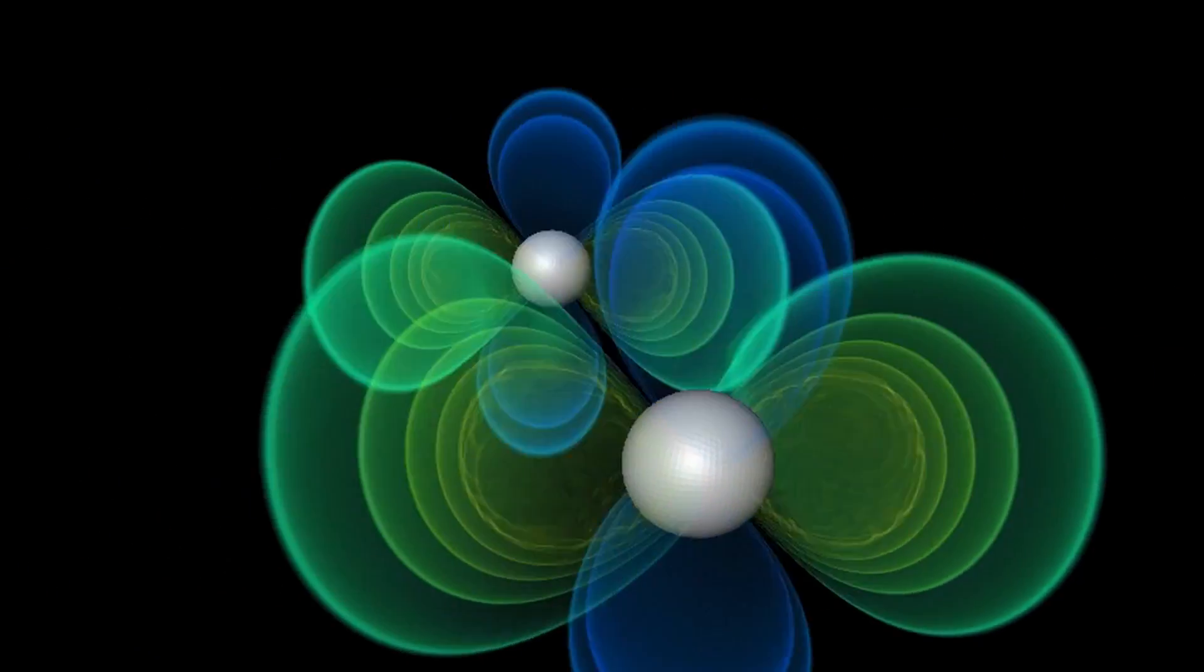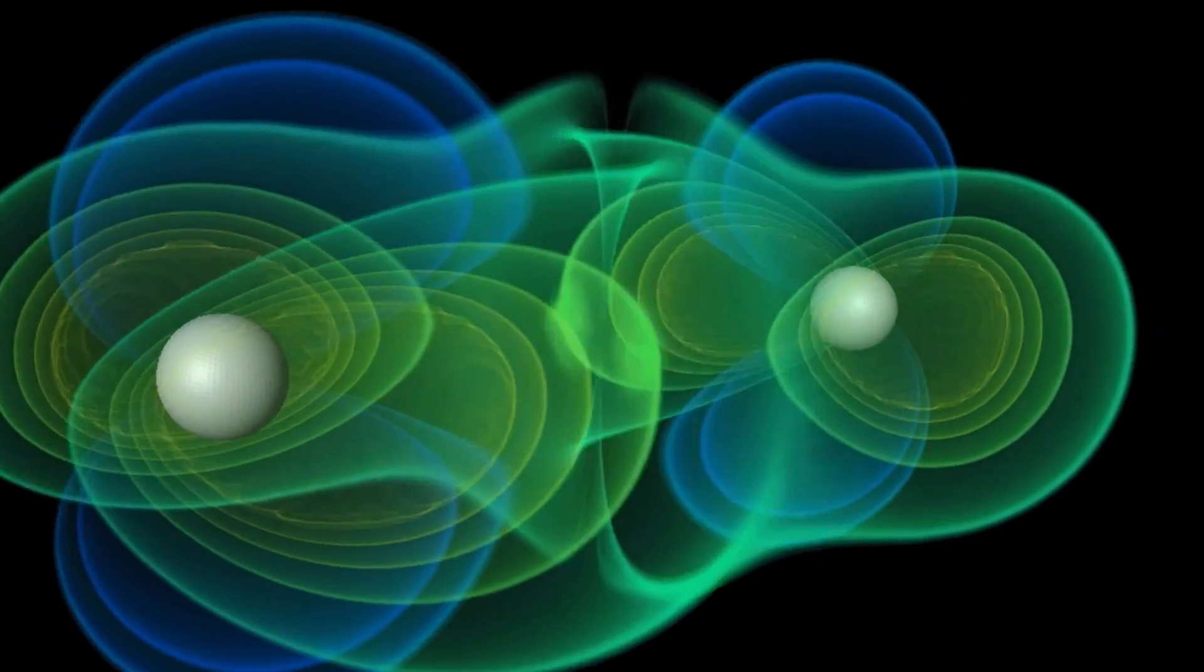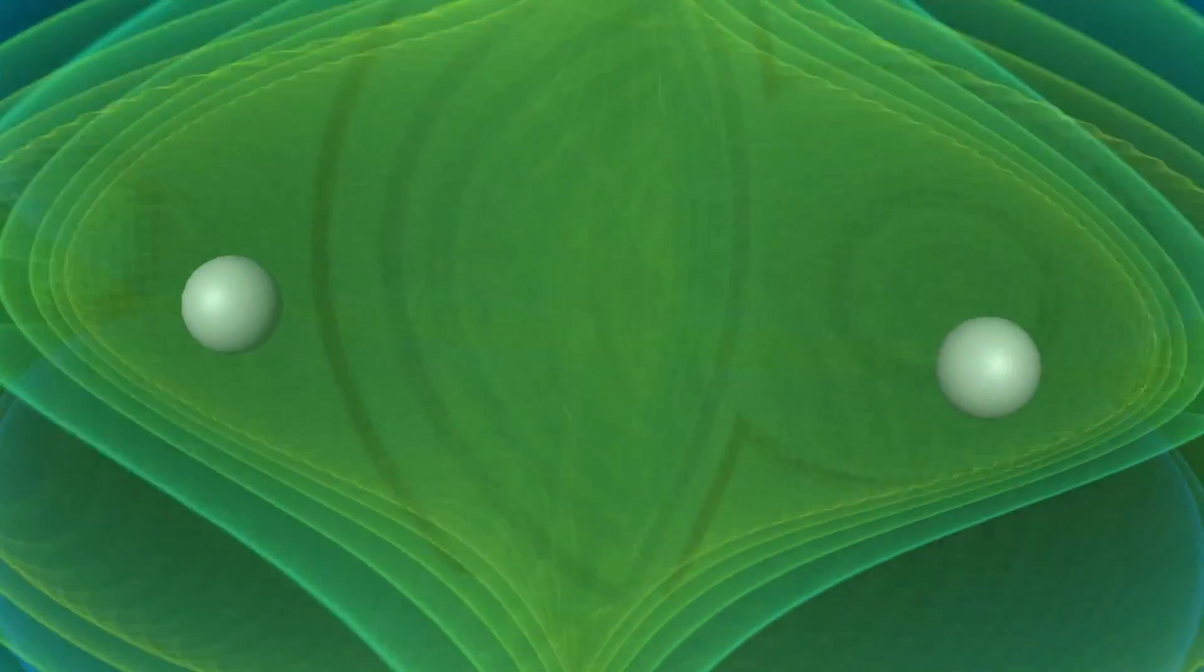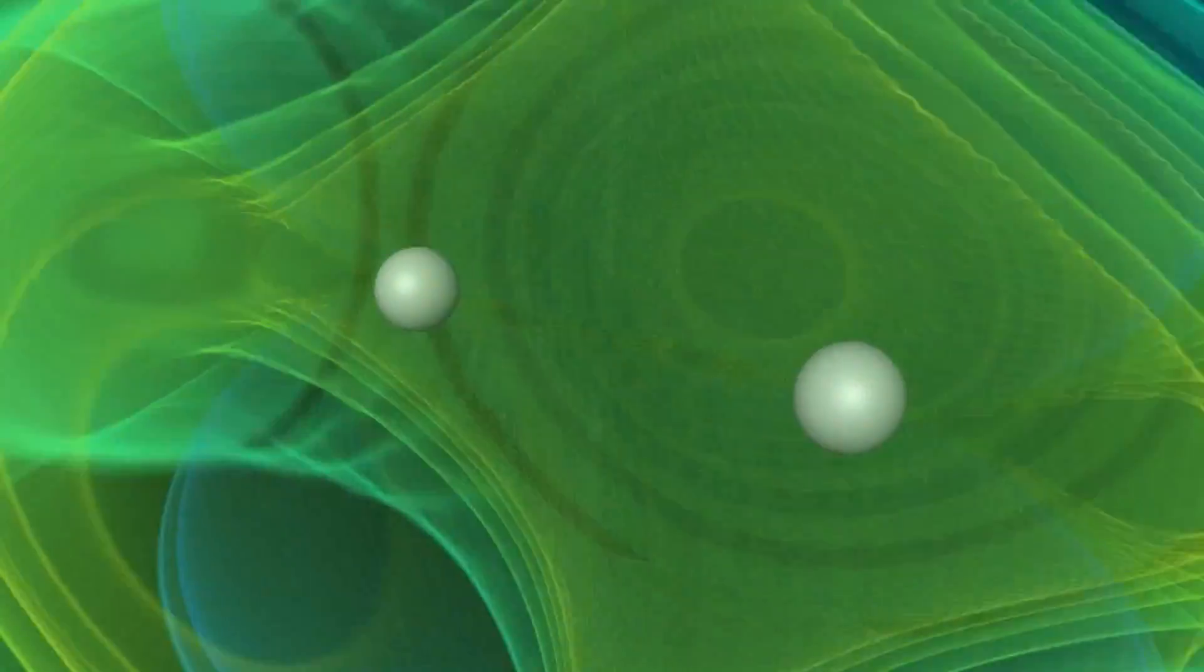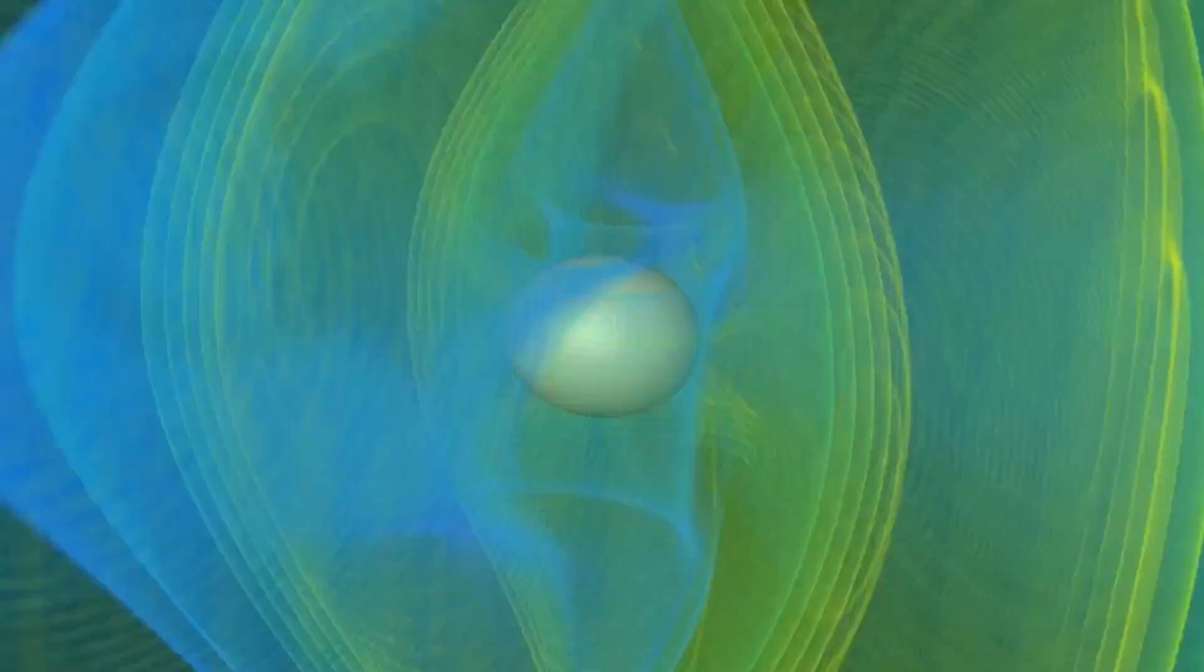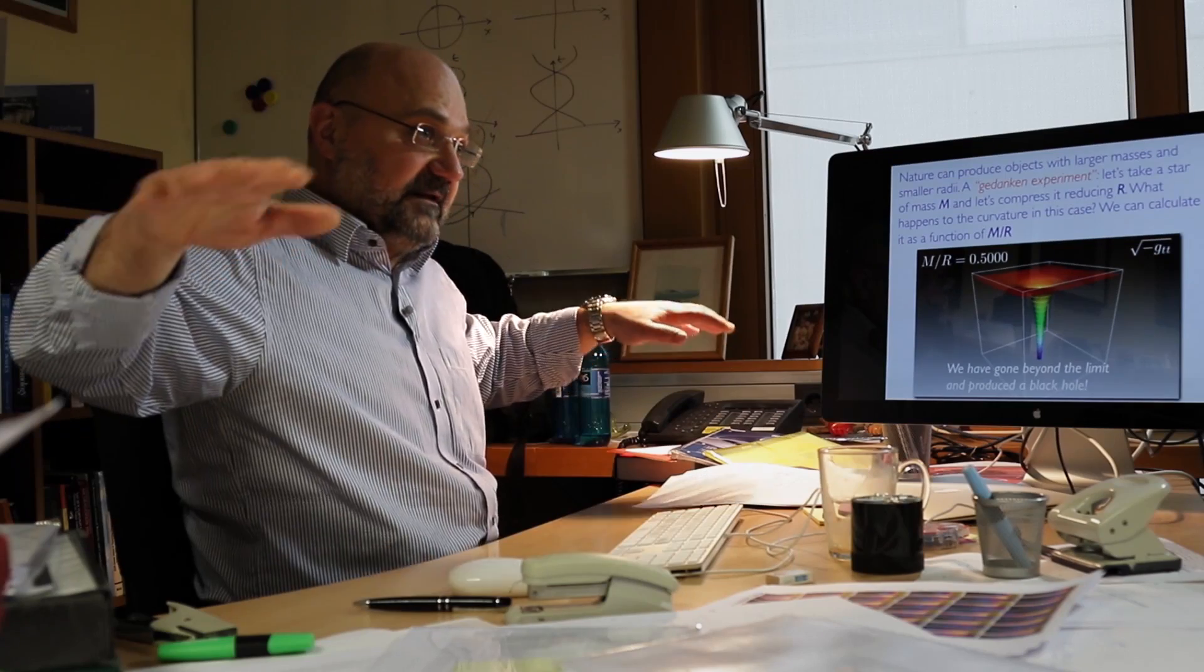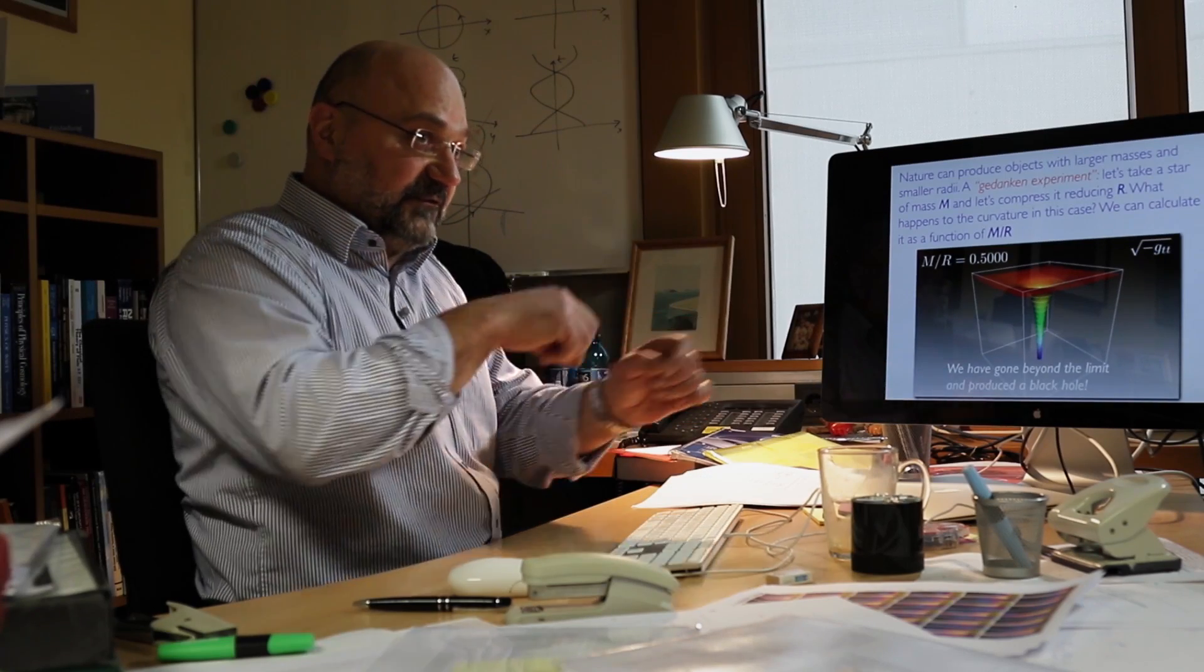They are attracting each other and at the same time they are trying to avoid each other. So they go around each other in this, what we call an inspiral. They are losing energy. They are emitting these gravitational waves. These ripples that are produced are produced by the motion of these two objects.